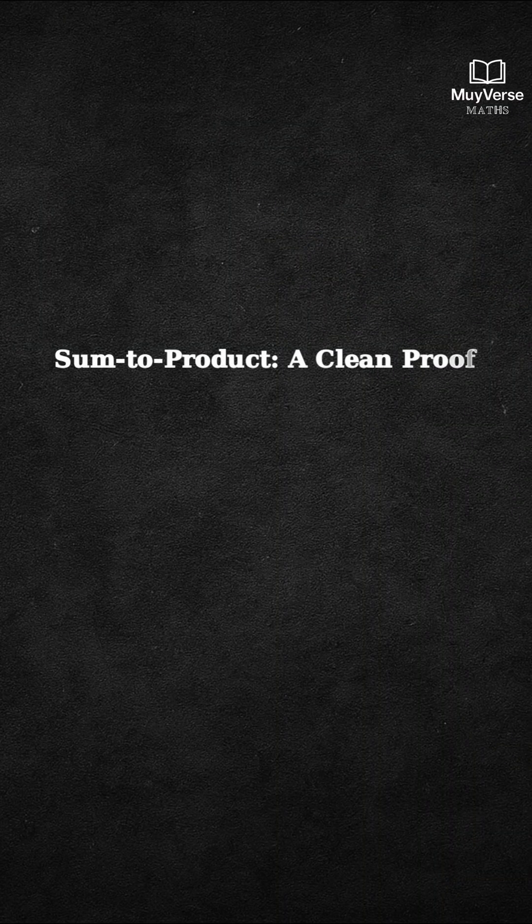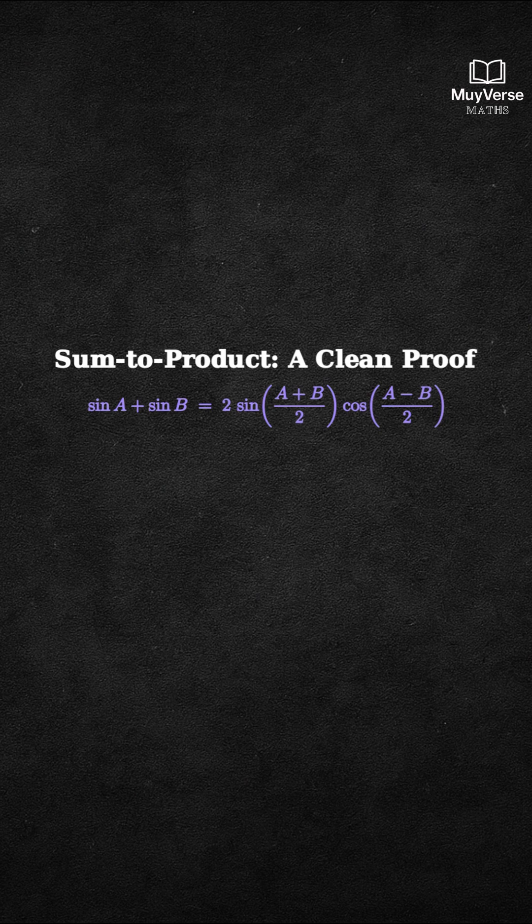We will prove the classic sum to product identity. Our goal is sine A plus sine B equals 2 times sine of open parenthesis, A plus B over 2, close parenthesis, times cosine of open parenthesis, A minus B over 2, close parenthesis.